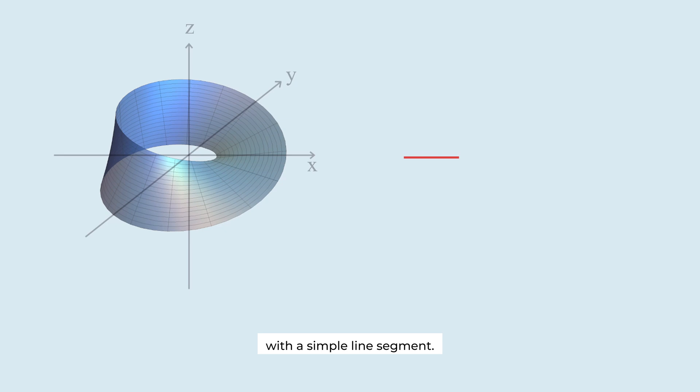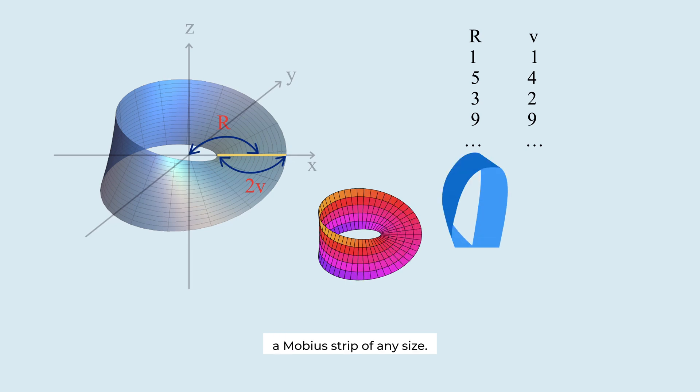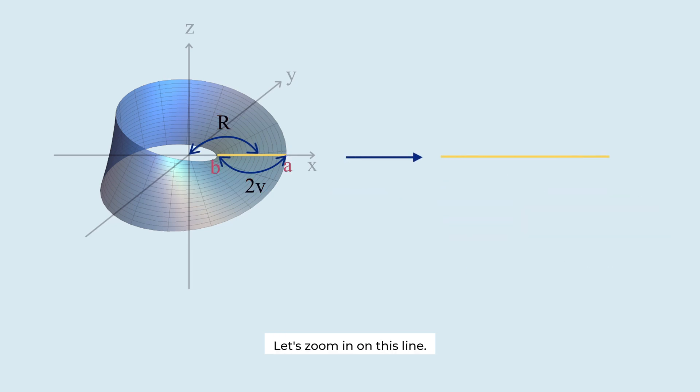Now let's start with a simple line segment. At the beginning, this line lies along the x-axis, meaning all its y and z coordinates are zero. The distance from the origin to the strip is R. The width of the strip is 2v. By adjusting R and v, we can create a Möbius strip of any size. Let's zoom in on this line. Here are the coordinates of three points.